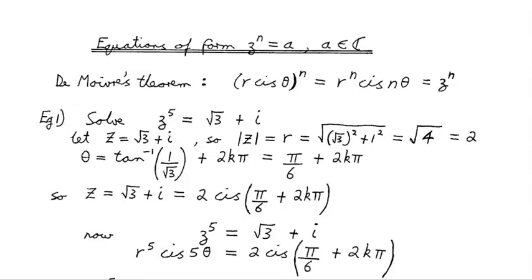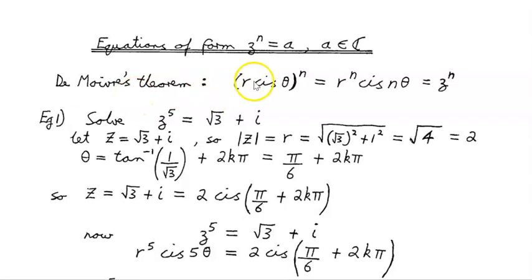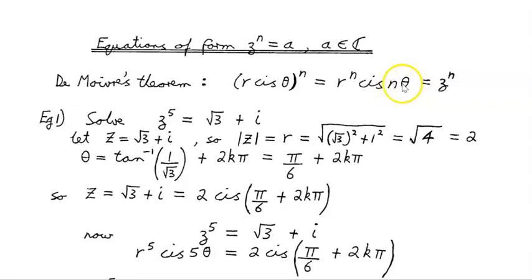Let us look at equations of the form z to the power of n equals a, where a is an element of the set of complex numbers. From de Moivre's theorem, we've seen that r cis θ to the power of n is r to the n times cis n times θ.